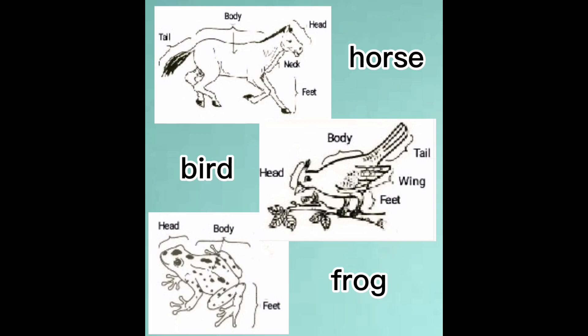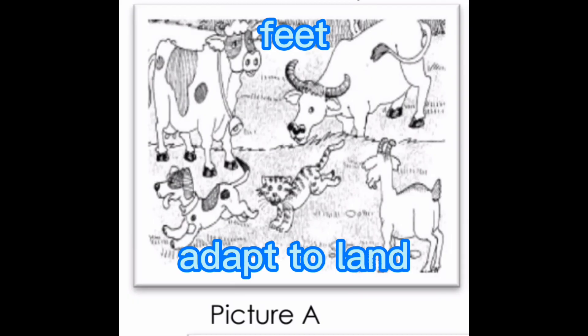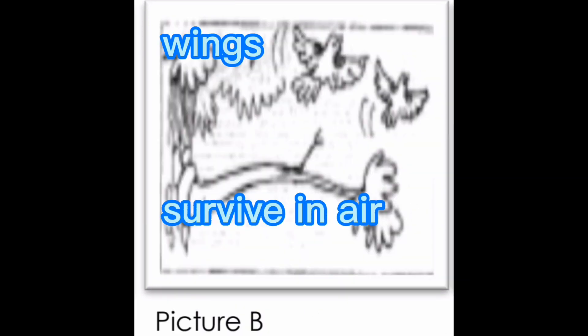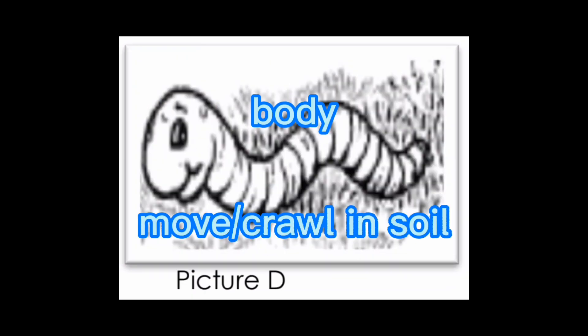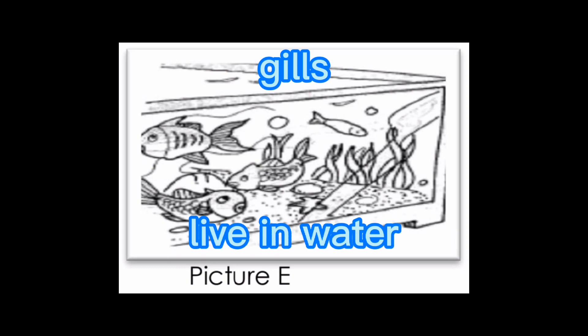For this week, you will learn the body parts of animals they use to adapt in their environment. Animals with four legs adapt to land. Birds have wings and survive in the air. The beak is used for getting food. Worms and snakes can move or crawl in soil. Fish have gills to live in water.